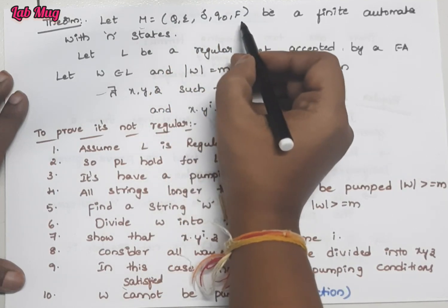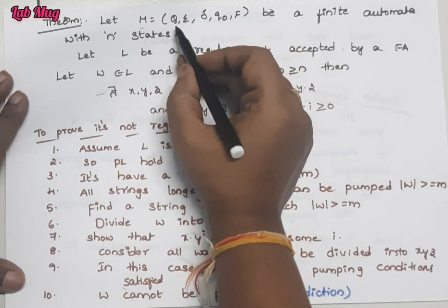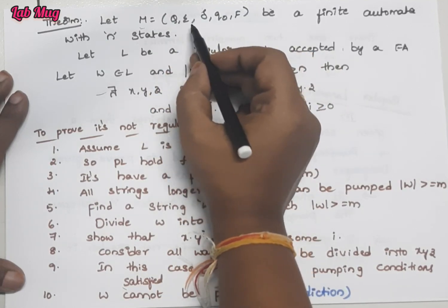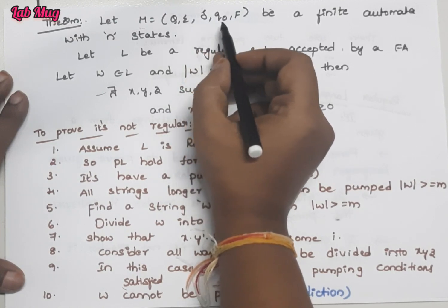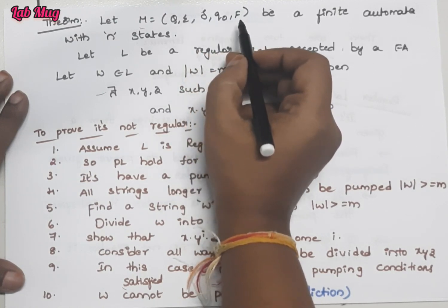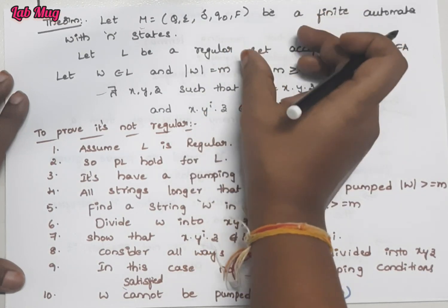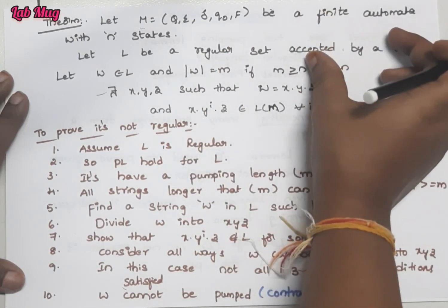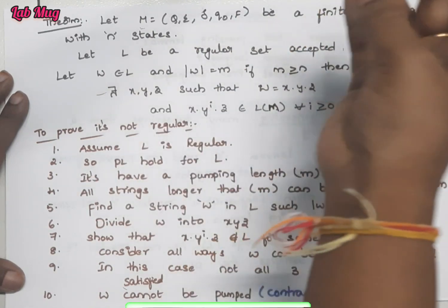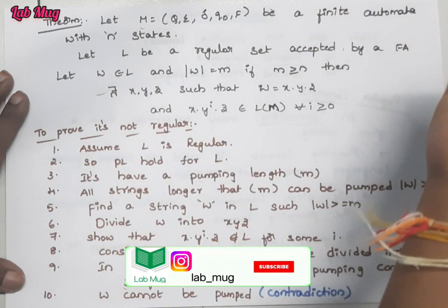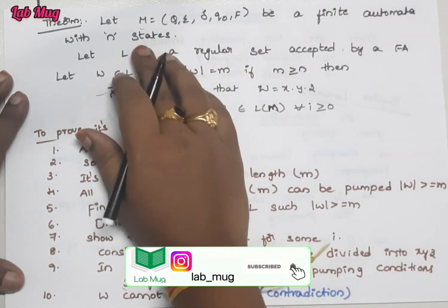Exam point of view lo gaani, competitive exams lo gaani, placements lo gaani, theory of computation lo ee theorem main role play chestundi. Manam ikkada mathematical function tiskuntam — that is (Q, Sigma, Delta, Q-naught, F). Q is the collection of states, Sigma is the collection of input symbols, Delta is the transition function, Q-naught is the initial state, and F is the final state. So idi oka finite automata with n states — that is Q-naught, Q1, Q2, Q3 ane states tiskuntam.